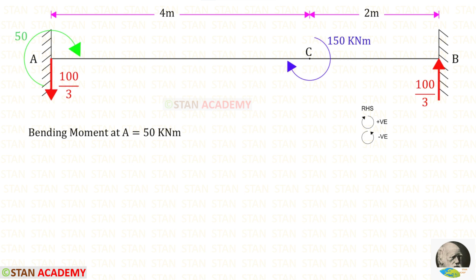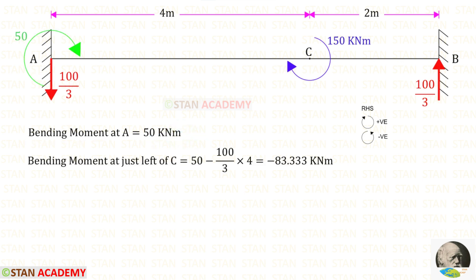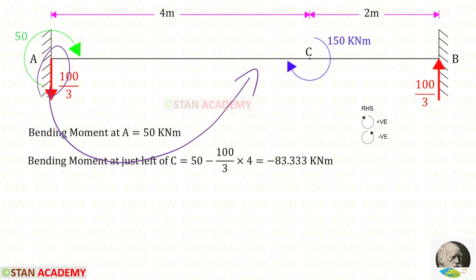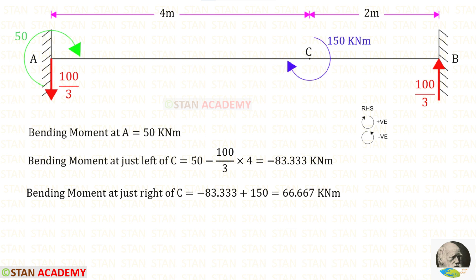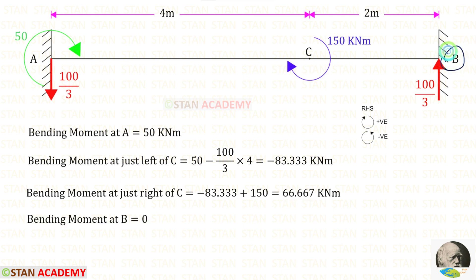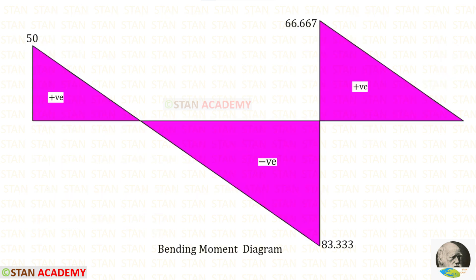Now let us find the bending moment values. At point A, we have MA acting in the clockwise direction, so it is positive. At just to the left of point C, considering RA acting downward at distance 4, we get −83.333 kNm. At just to the right of C, we add the concentrated moment of 150 (clockwise, so positive): −83.333 + 150 = 66.667 kNm. At point B, the bending moment is 0. Here you can see the bending moment diagram.